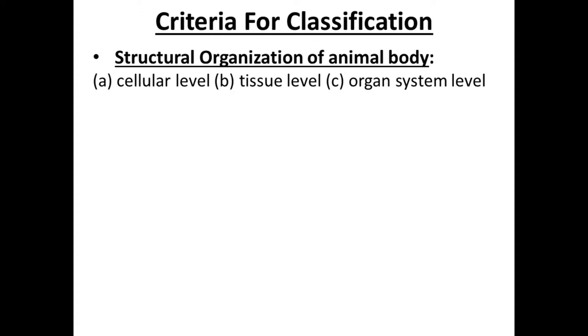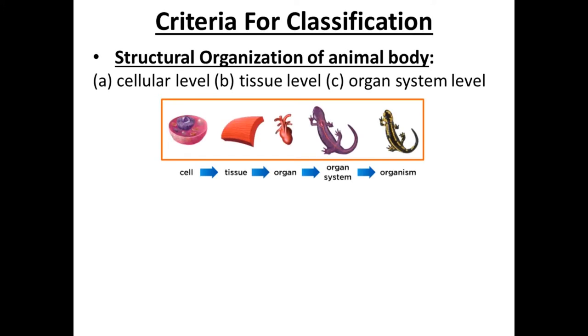Now the criteria for classification of the animal kingdom. The first criterion is structural organization of the animal body — whether the organization is at the cellular level, tissue level, or organ system level. At the cellular level, there is just a group of cells. At the tissue level, groups of cells form tissue. At the organ system level, tissues form organs, and different organ systems unite to form the organism.